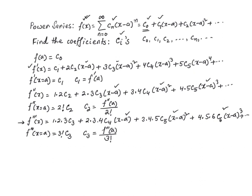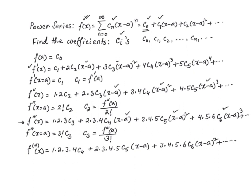Taking the fourth derivative and evaluating at x equal to a gives four factorial times c sub four. So c sub four equals the fourth derivative of f evaluated at a, divided by four factorial.